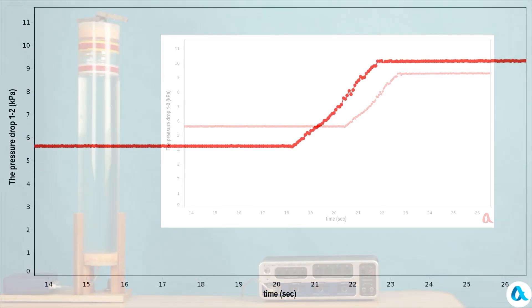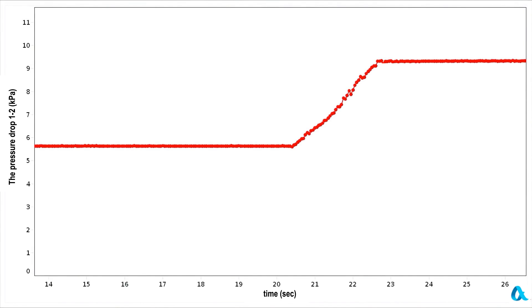Now, let's take a closer look at the pressure graph. The initial water pressure at the bottom of the vessel was 5.6 kPa, which corresponds to 57 cm of water column in the tube. And after the bubble rose to the top, the pressure increased by 3.8 kPa.